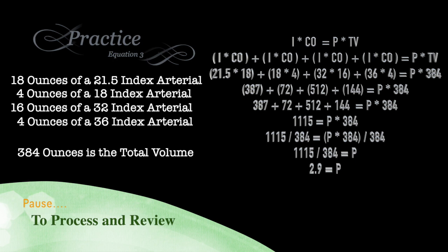As we do with all algebra, we do the multiplication first. So 21.5 times 18 is 387. And 18 times 4 is 72. And 32 times 16 is 512. 36 times 4 is 144. So we've written out each one of these.